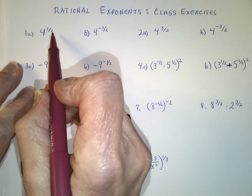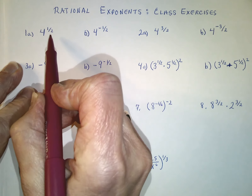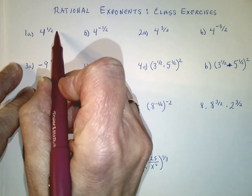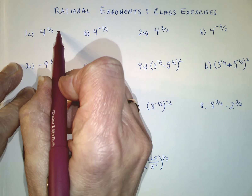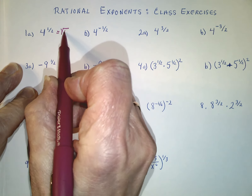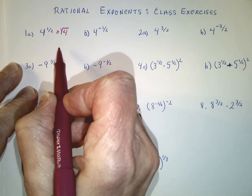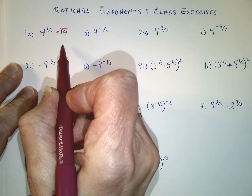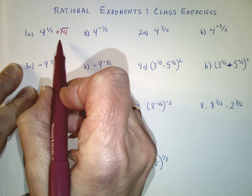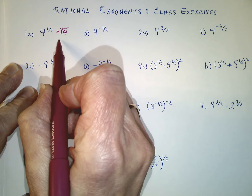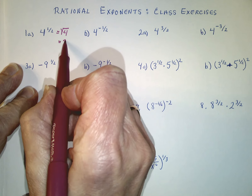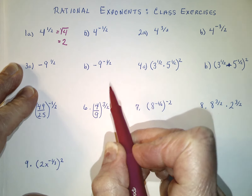The one-half power is the same as taking the square root. So this is just the square root of 4. They will expect you to simplify that — this is the same as 2.